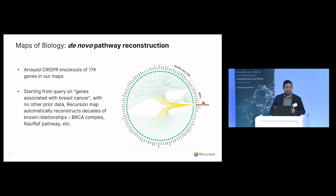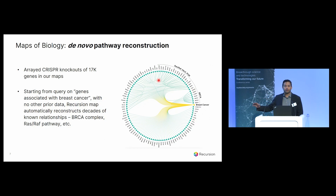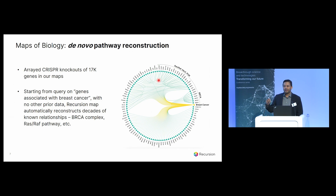You see BRCA1, BRCA2, RAD51, BARD1, PALB2, and so on. Up here you also see a mitogen-associated cluster — the RAS-RAF pathway, HER2, and PI3 kinase-associated genes. Importantly, there is no prior training on literature data. This is purely de novo reconstruction from experiments we've conducted, purely based on AI-enabled phenotypes from the cells. The model didn't know there was a gene called BRCA1 or BRCA2 — it simply sees identifiers, and those phenotypes draw the connections.